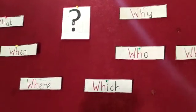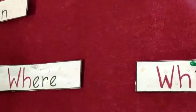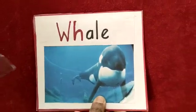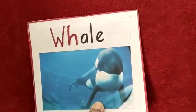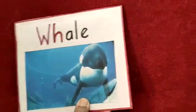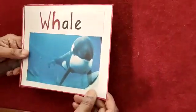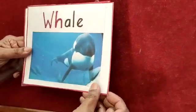Now here we have some other words for you. Can you see? Whale. We learnt about it in water animals — it's one of the biggest animals on earth, but it lives in the sea. So, a whale.